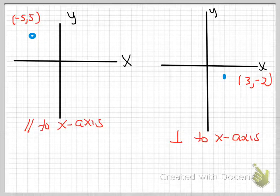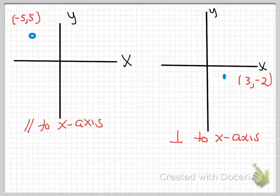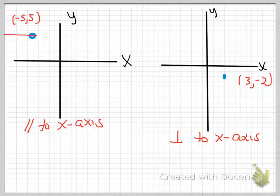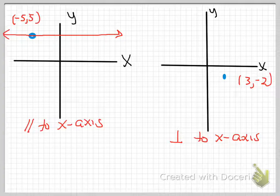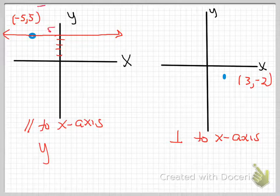Let's go back to our original problem. We have a point — negative five, five. We want a line that's parallel to the x-axis. I draw a red line parallel to the x-axis going through that point. Does it touch the x-axis? No. It touches the y-axis. Counting up to five — and notice the point has a five on the y side — so my answer is y equals five.